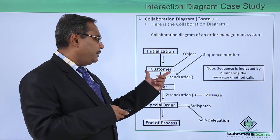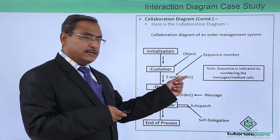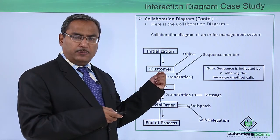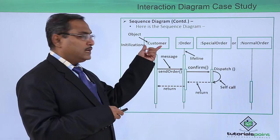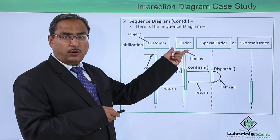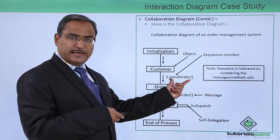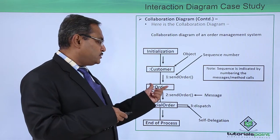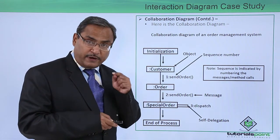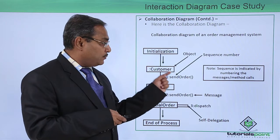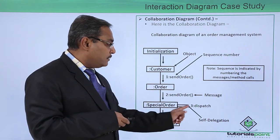In the collaboration diagram we have the customer object and the order object with the send order message between them. From the previous sequence diagram we had the idea that send order must be between the customer object and the order object, and here we can see that in the collaboration diagram these messages are numbered.